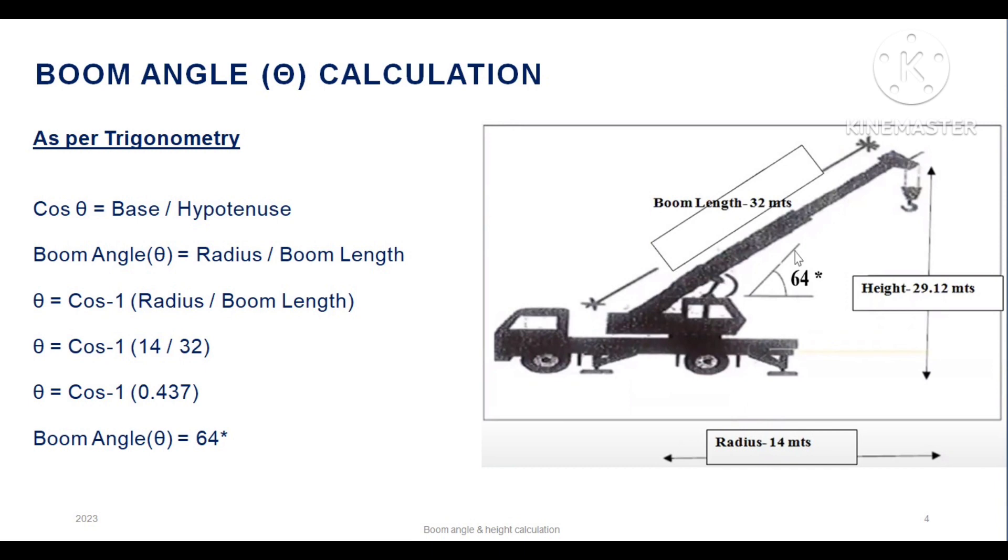So θ = cos⁻¹(radius/boom length). So cos⁻¹(14/32), which is radius by boom length. So we are getting the angle 64 degrees.